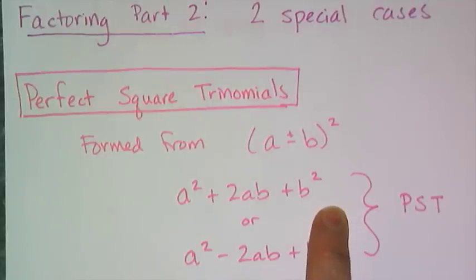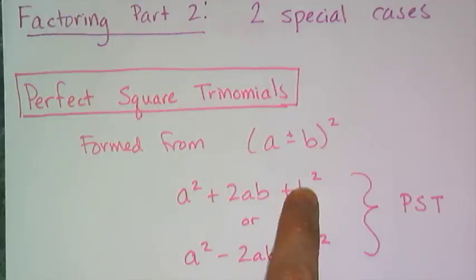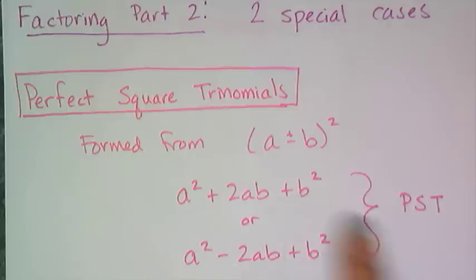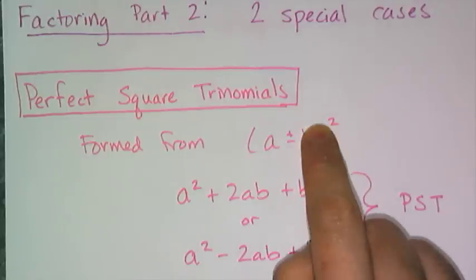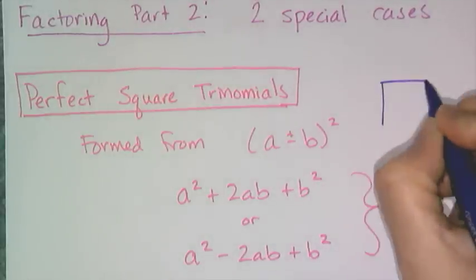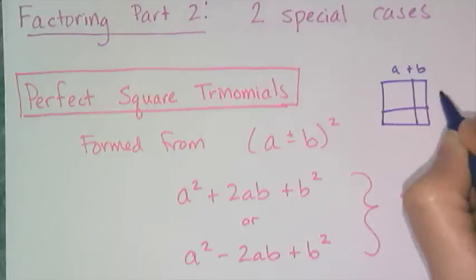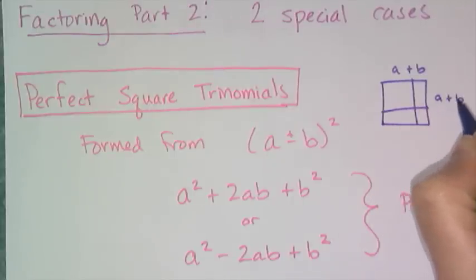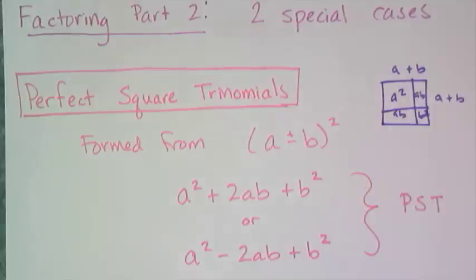They're called perfect square trinomials because they are trinomials with three terms, and they are formed by squares. You can also think of it geometrically: you have a plus b as one dimension and a plus b as the other dimension, so it's a square that's (a plus b) by (a plus b). That's where the perfect square trinomial name comes from.